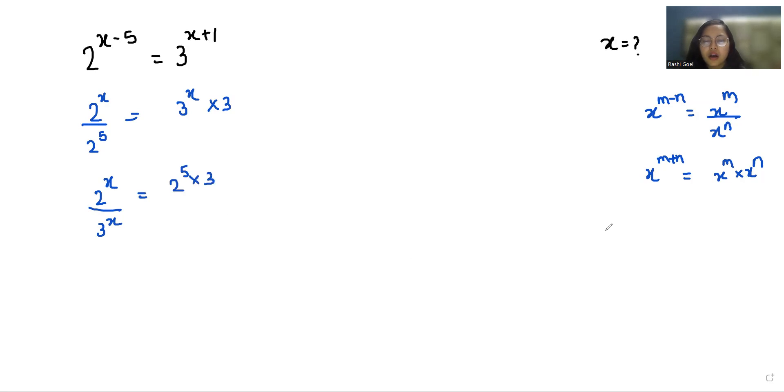Another exponent rule: x^m / y^m can be written as (x/y)^m. So it becomes (2/3)^x equals 32 × 3, which is 96.